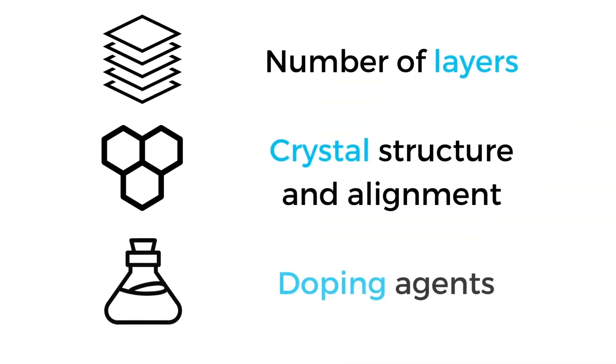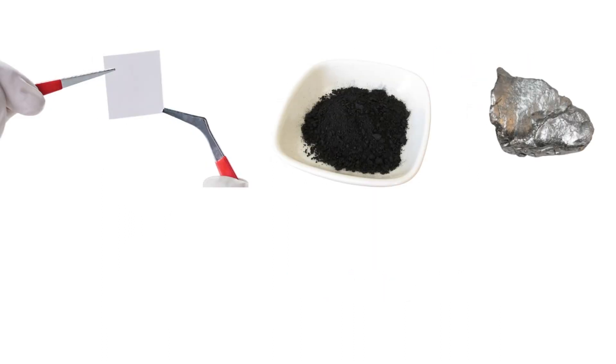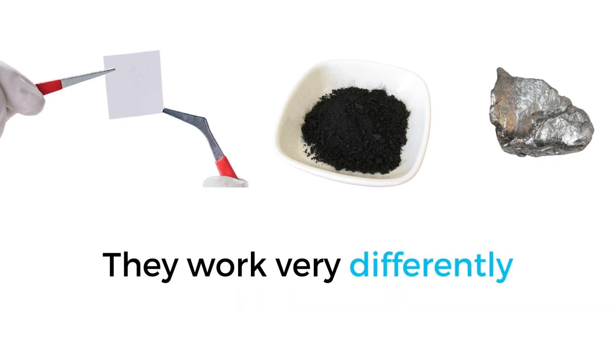In reality, graphene's properties change as we go beyond the nanoscale and increase the number of graphene layers being used, change the crystal structure and alignment, introduce doping agents, and use different substrates. This is why graphene works very differently compared to graphite and even graphene oxide, despite all of them being carbon-based materials that are closely related.